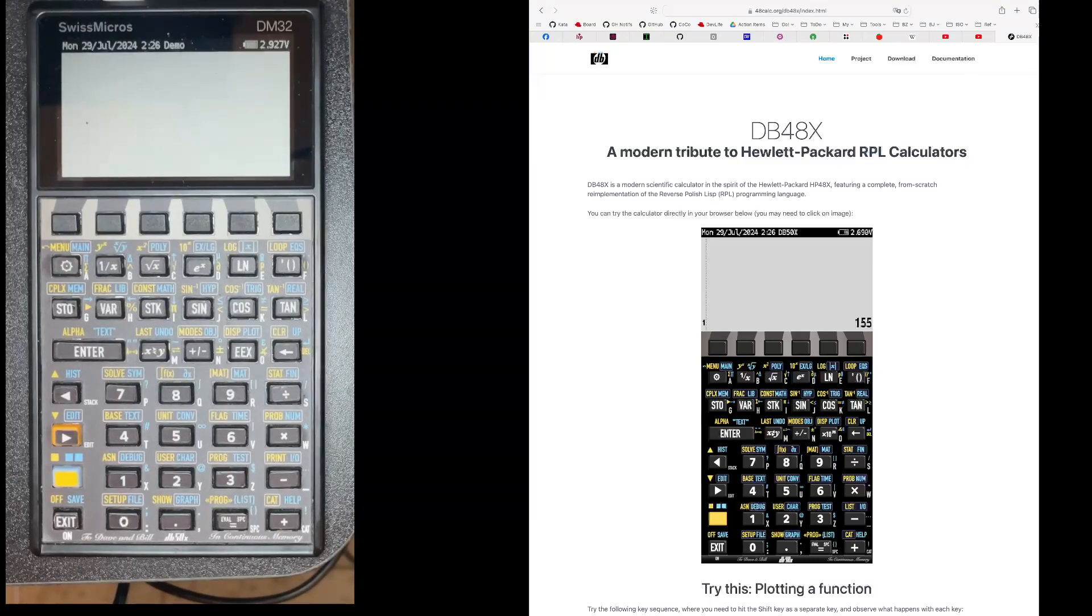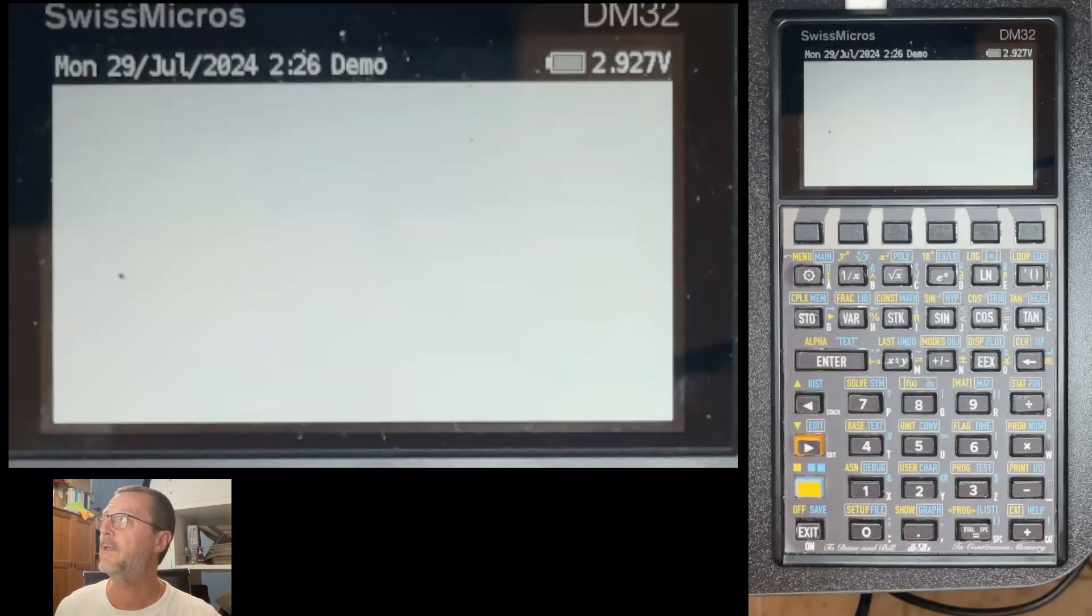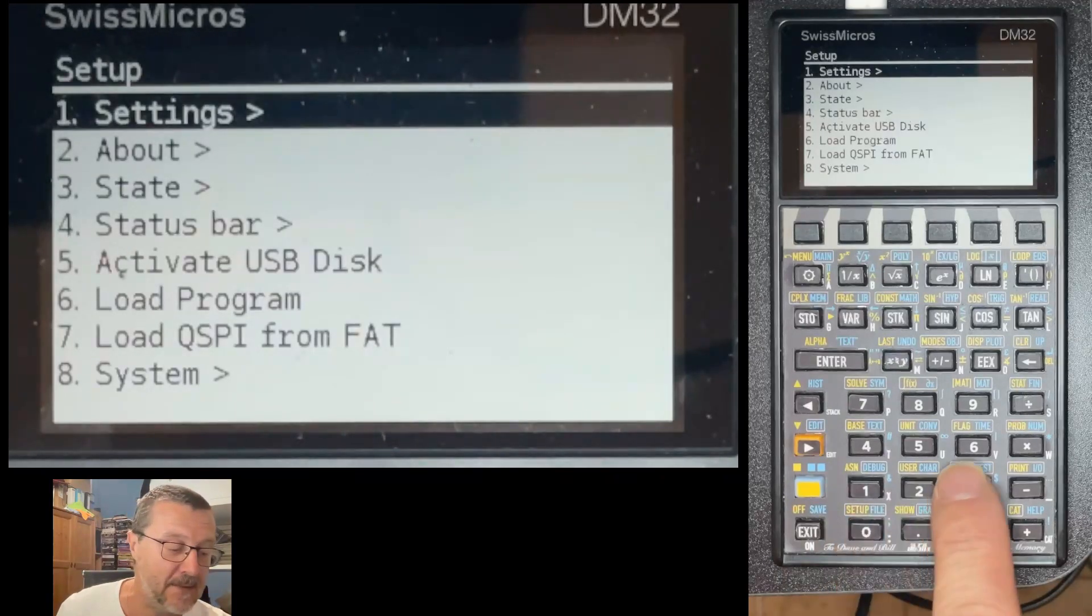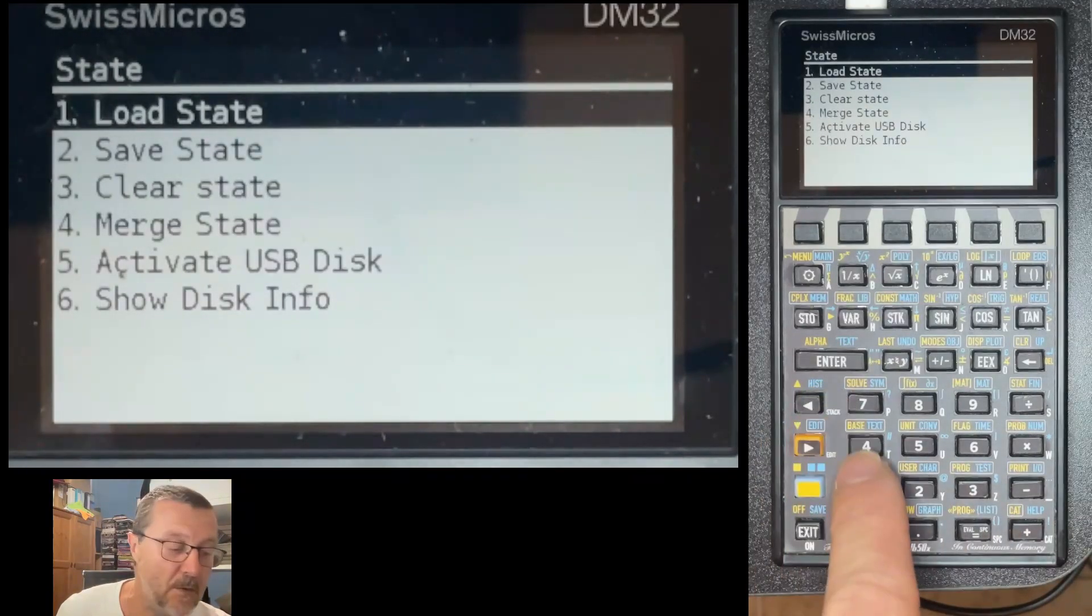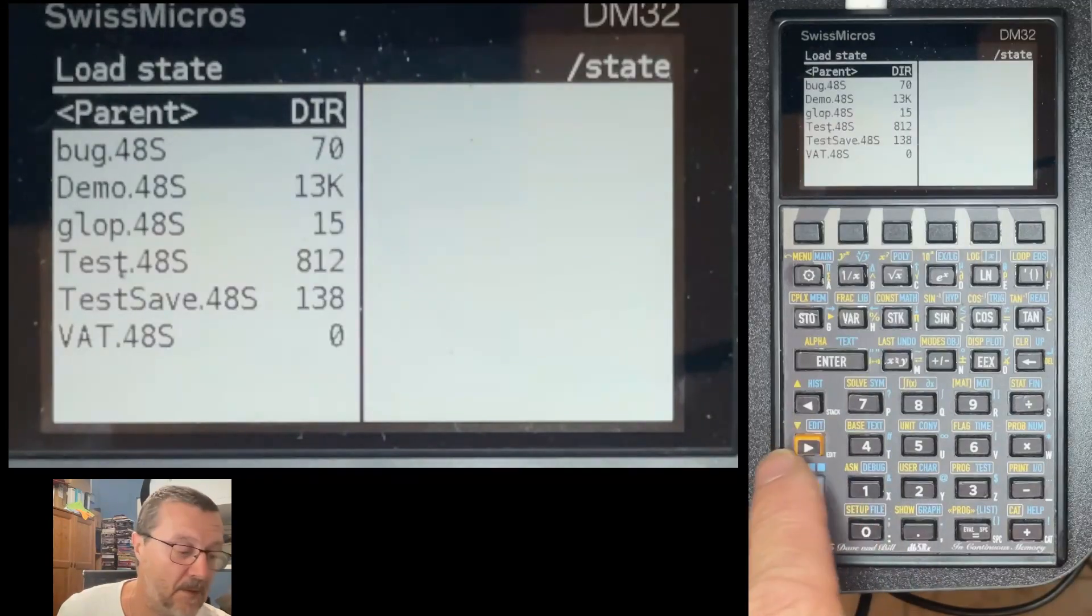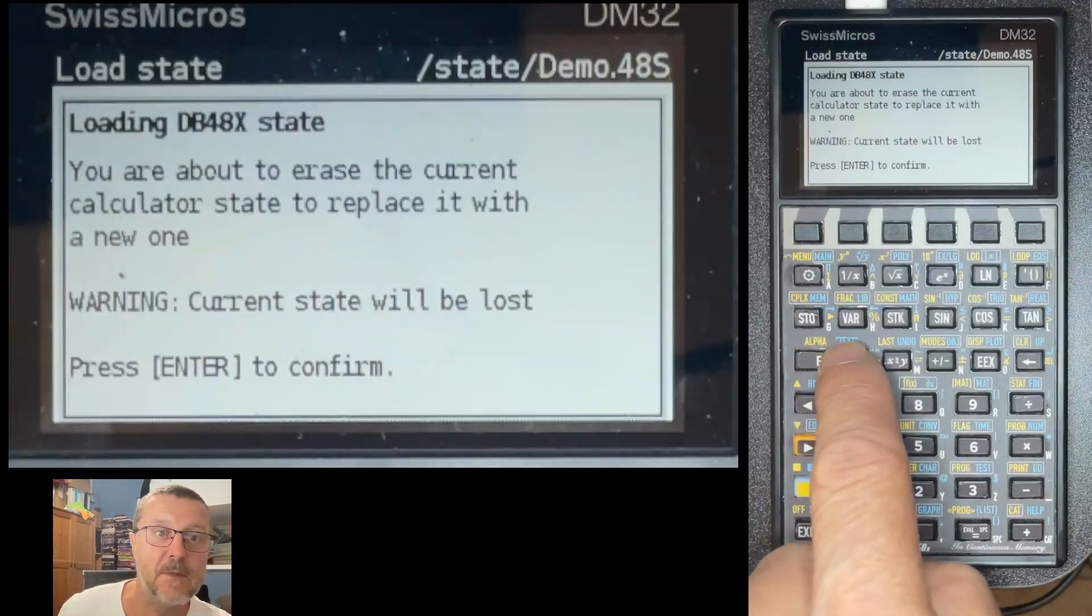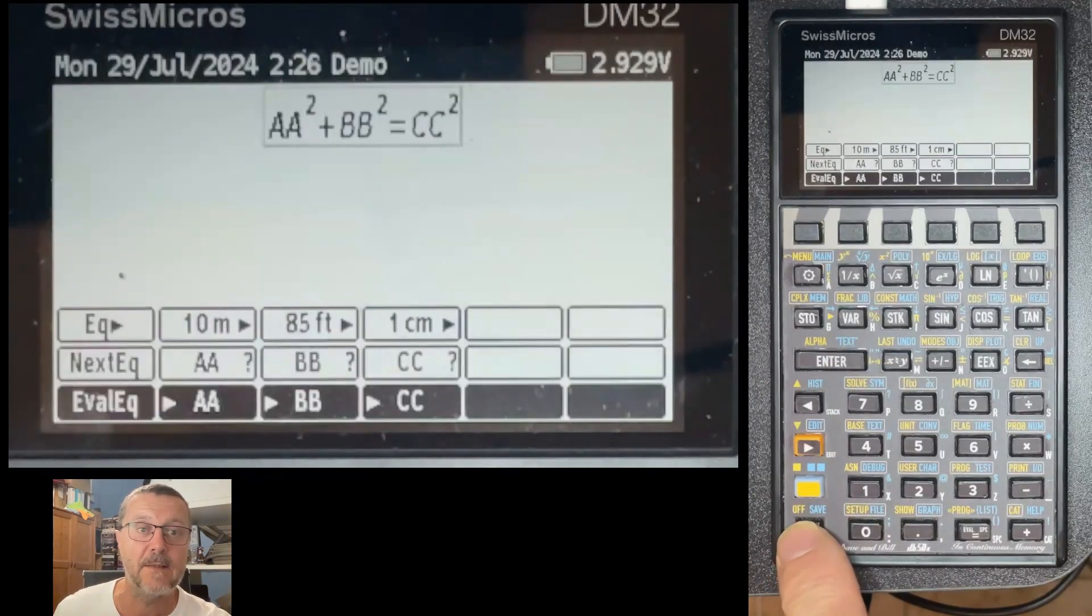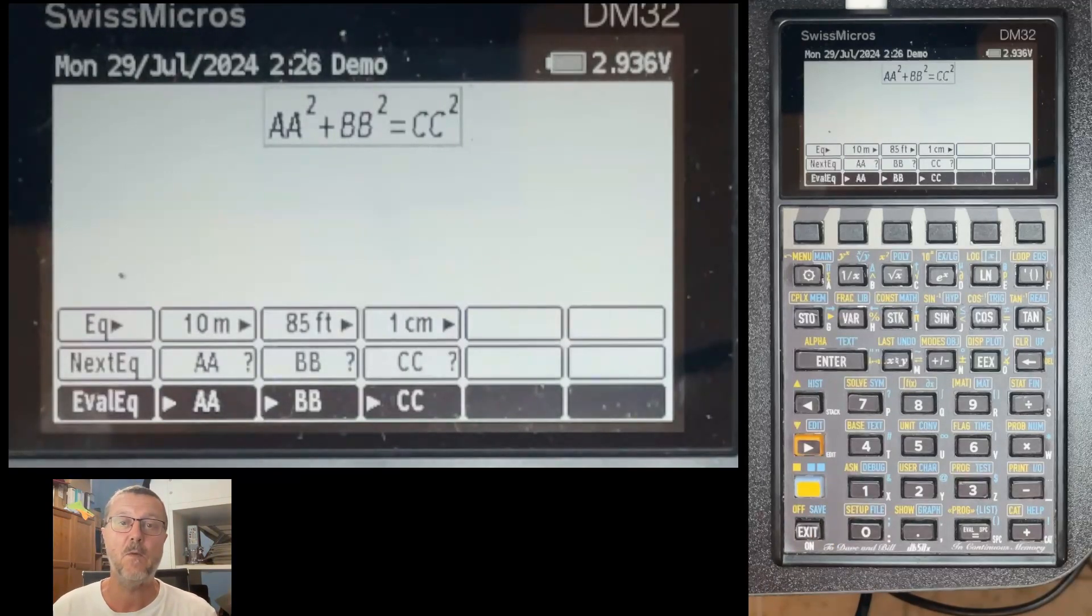There is some work to be done there. I'd like to have a real iPhone version at some point. Back to the device itself, in terms of what's new, let's start by loading the state file called demo. That's shipped with the firmware. When we enter the demo, we start in this state where we have an equation with three variables called AA, BB and CC.